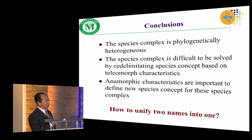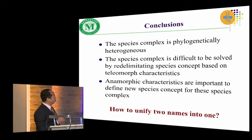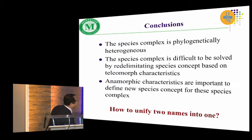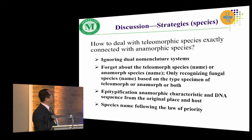We asked the students to draw some conclusions: a species complex is phylogenetically heterogeneous, meaning a telemorphic species is actually a complex. Anamorphic characteristics are important to define a species of the telemorph. So the focus became: how to unite the two names.